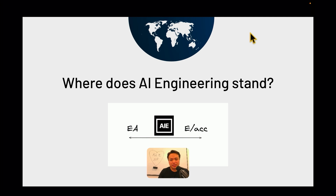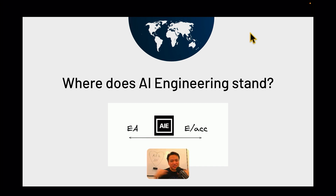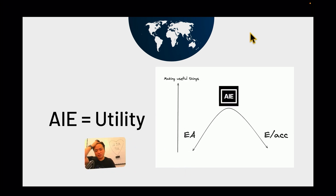It's worth commenting on where AI engineering stands in contrast to other AI philosophies. There's EA versus EAC — and maybe we're in the middle: we care about safety but we also want to accelerate. My proposal is that one dimension isn't enough to express how AI engineering differs from other philosophies. We actually need a second dimension to talk about utility. We are utility maxis above all else — we see what's out there and we want to use it to benefit humanity.